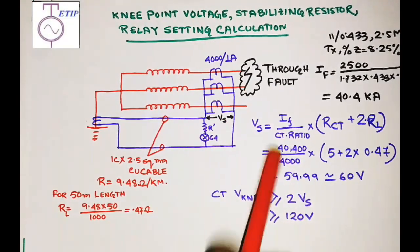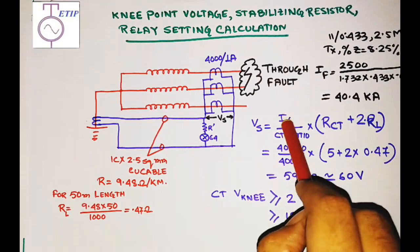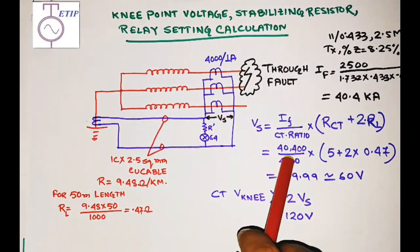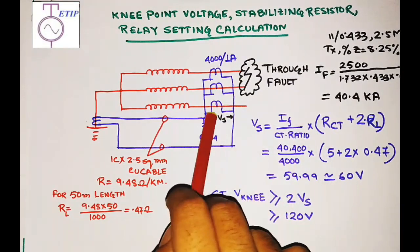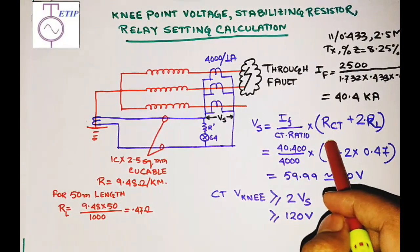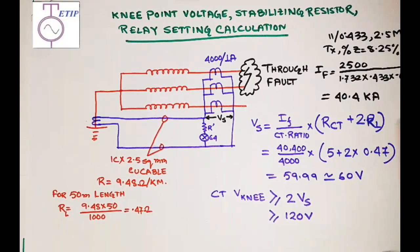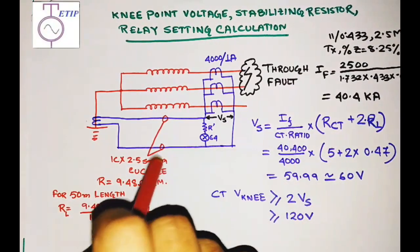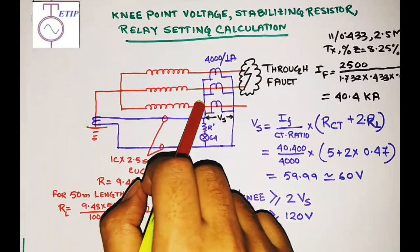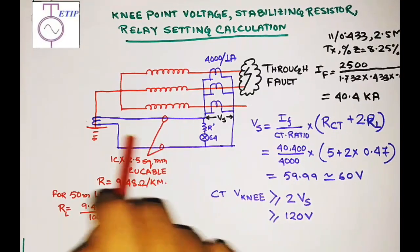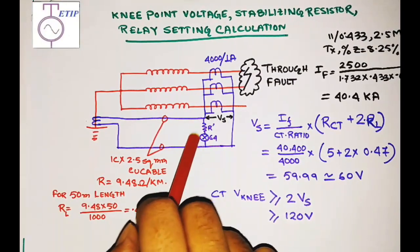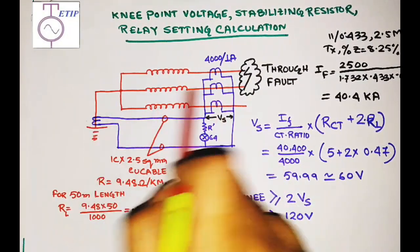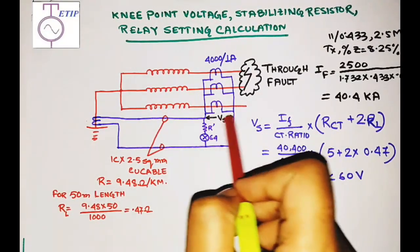Now, how do we calculate Vs? The formula is: Vs = (If / CTR) × (Rct + 2Rl). Here If is the fault current in amperes, and since this is a 4000/1 A CT the ratio is 4000. Rct is the internal resistance of the CT — this is a specified value, generally less than or equal to 5 ohm, meaning the CT resistance should not exceed 5 ohm. Rl is the lead resistance — the CTs are generally placed at the transformer line bushing or neutral bushing, but the relay is usually placed at the switchgear or relay panel, which is away from the CT.